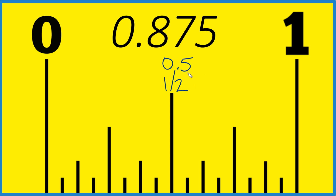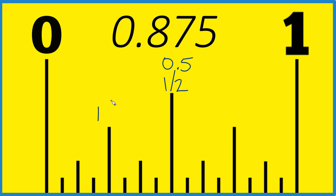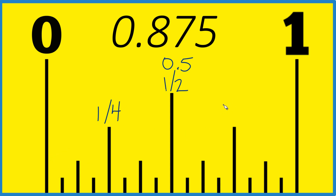It's going to be on this side because 0.875 is greater than 0.5. If we cut this in half, we get one-fourth. So we have one-fourth, two-fourths, three-fourths — this is the three-fourths line.